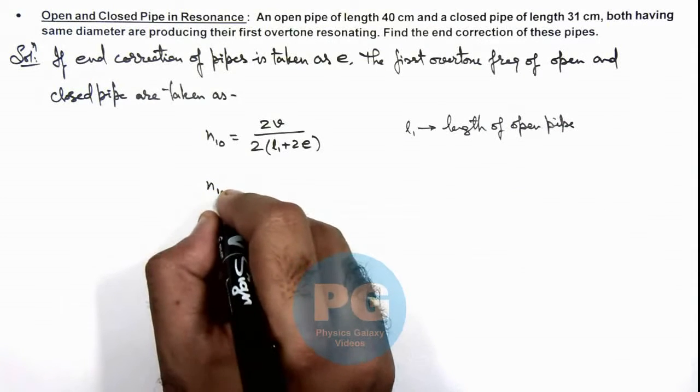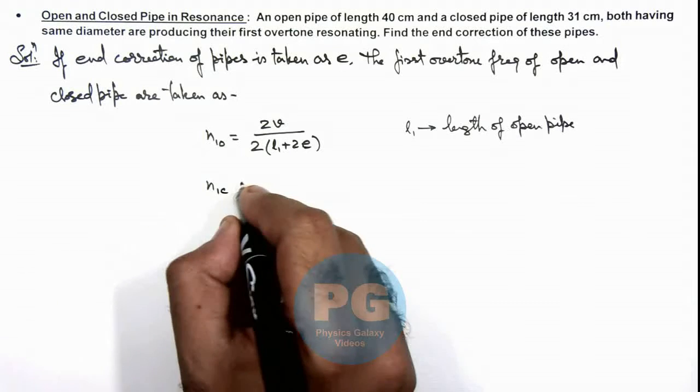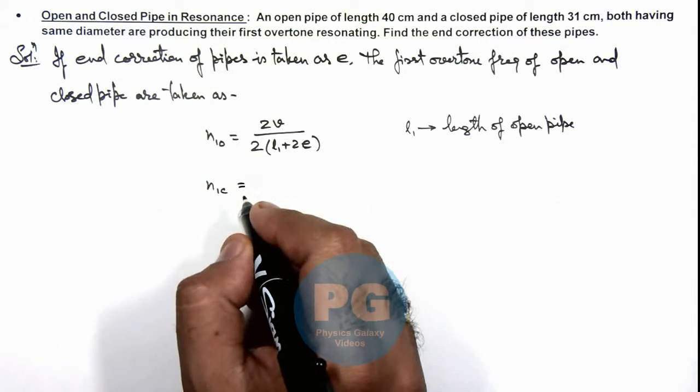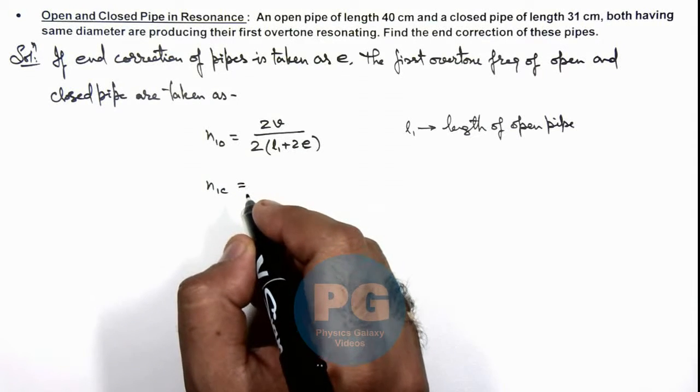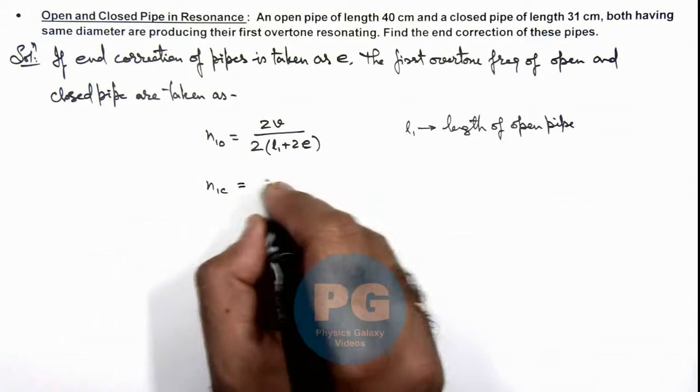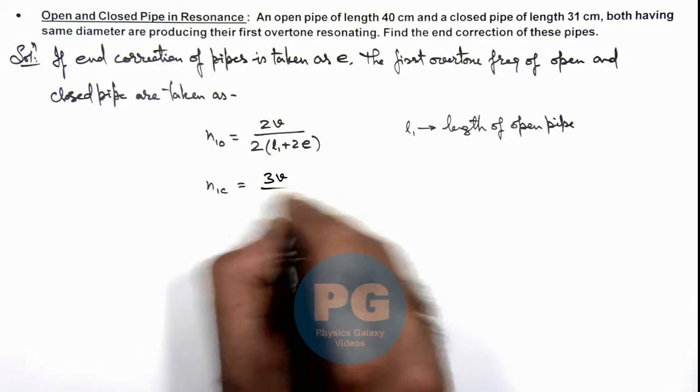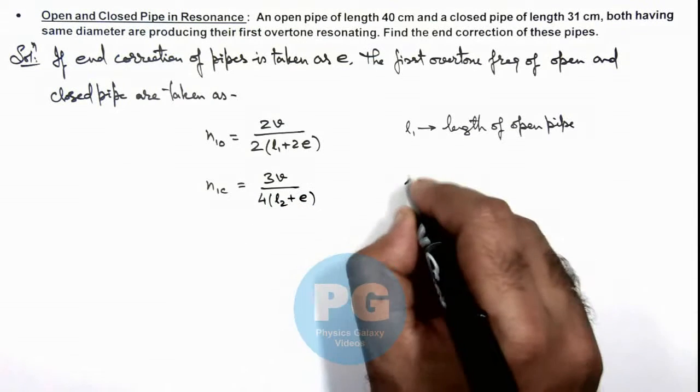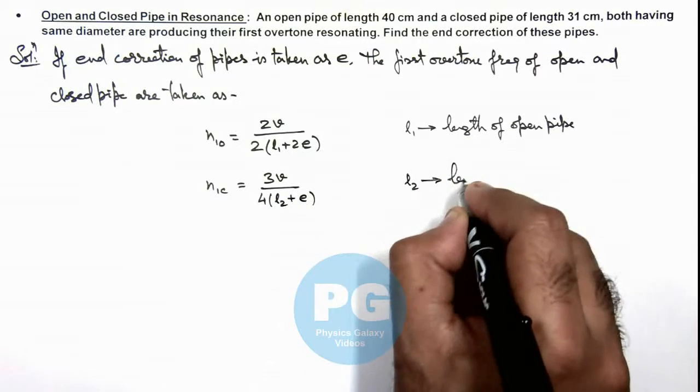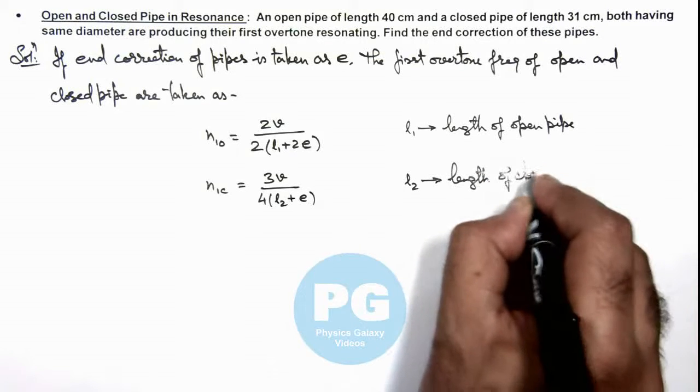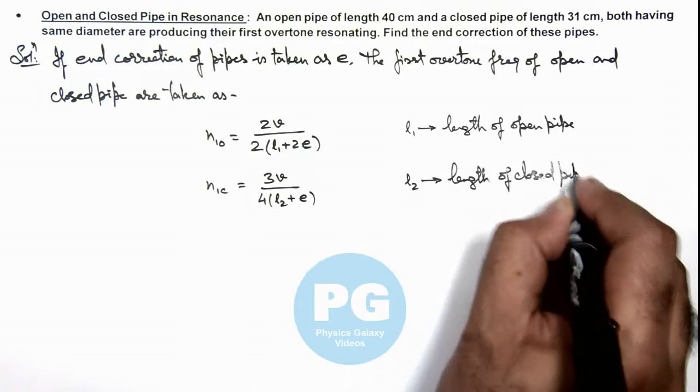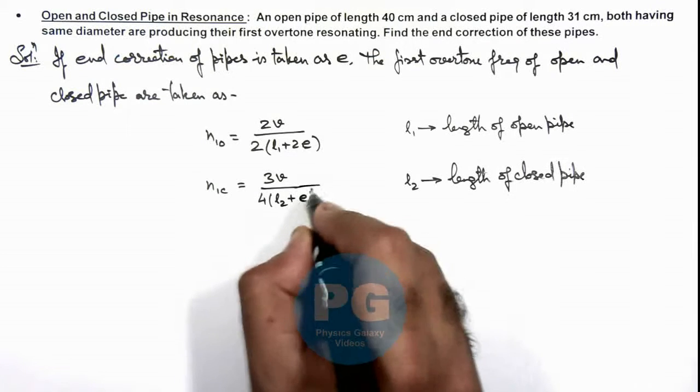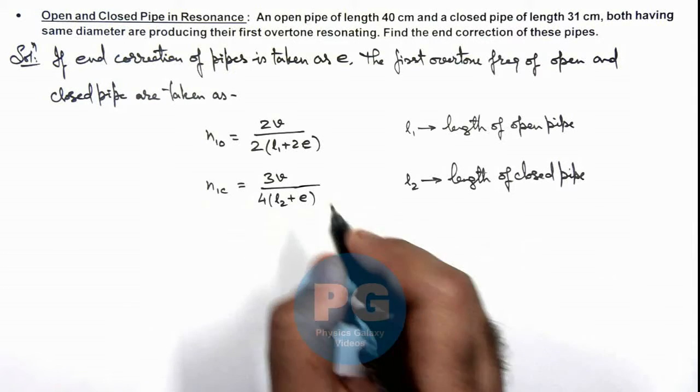The first overtone frequency for the closed pipe, as it'll be the third harmonic frequency and fundamental is taken as v by 4L, so this we take as 3v by 4 times (L2 plus e), where L2 is the length of closed pipe. In this situation we have added end correction only once because this is closed from one end.